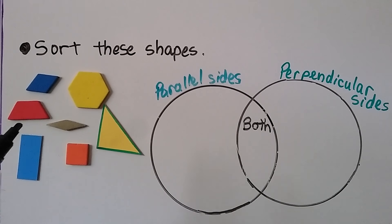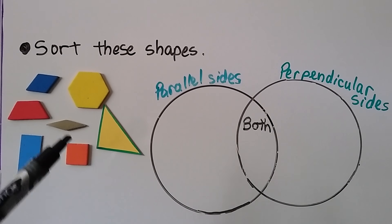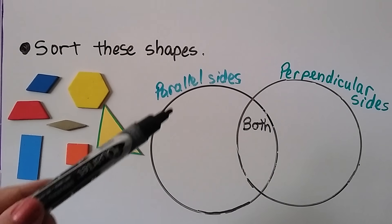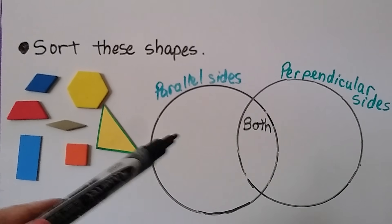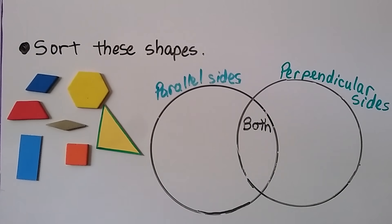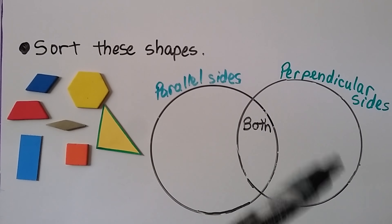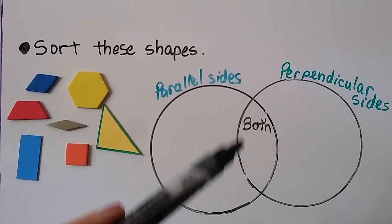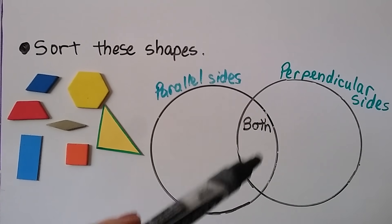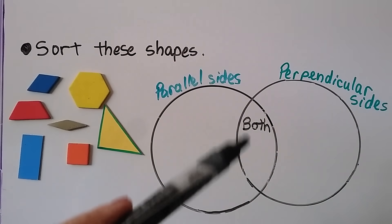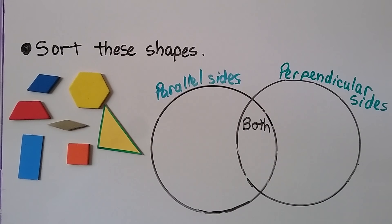We need to sort each of these shapes and put them in the circle for parallel sides, the circle for perpendicular sides, or where the circles overlap — that would be both parallel and perpendicular.